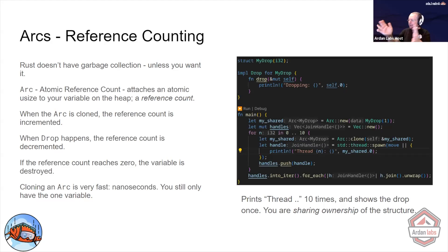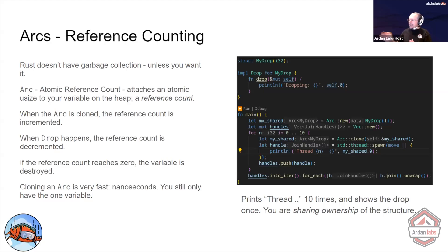You've still got one of them. Clone is almost instantaneous — it is nanoseconds to increase an atomic integer. So if you are finding yourself getting frustrated with the borrow checker, consider putting an ARC around it. You can still clone it, but now clone doesn't require that a complete copy be made. You still have one shared variable.